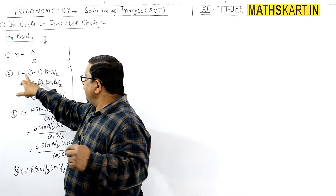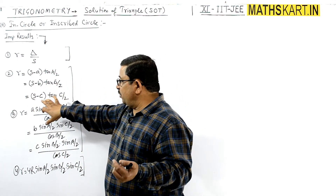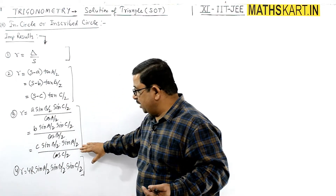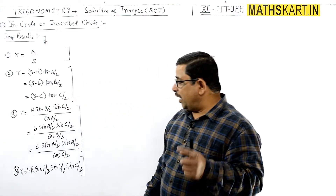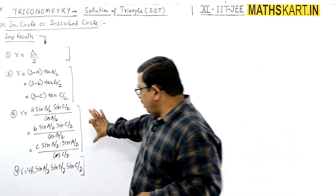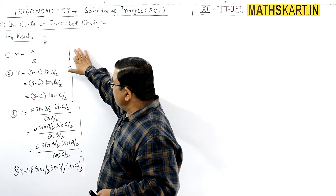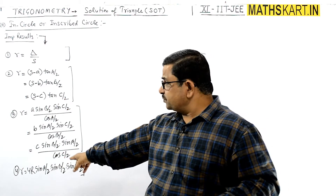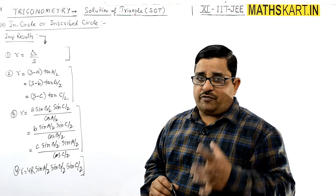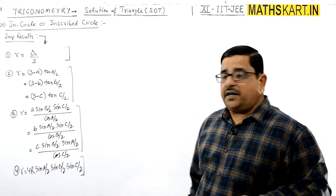The same small r value can also be given as (s minus a) tan(A/2), which equals (s minus b) tan(B/2), which equals (s minus c) tan(C/2). And also, small r equals 4R sin(A/2) sin(B/2) sin(C/2). This is a set of formulas for r given in different formats, and all of them we can learn.